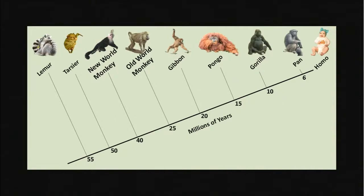There are some physical differences between old world and new world monkeys. Old world monkeys have longer protruding snouts, more like a dog, and their nostrils face downwards. New world monkeys have flat noses with a broader septum and their nostrils face forward. Next we have apes, starting with the lesser apes — the gibbons and the siamangs of Asia.